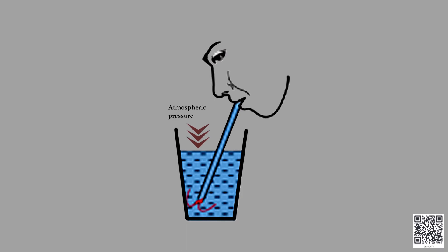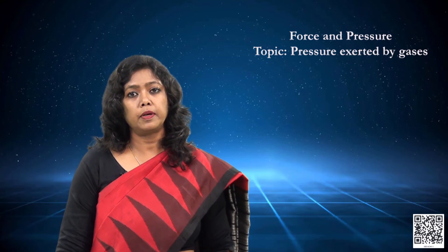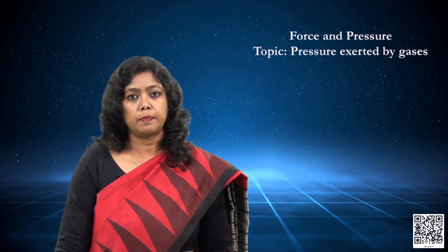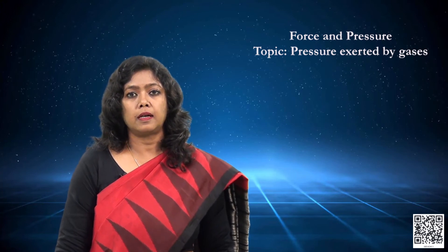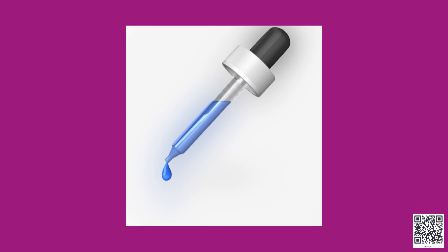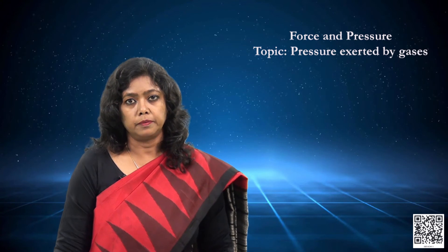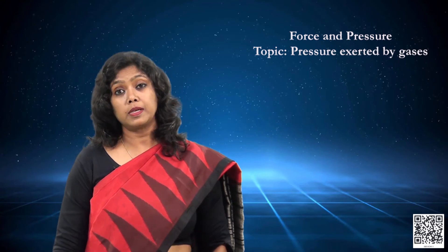Another very common example is the dropper. We have droppers in medicine bottles and various places. We press the rubber tip of the dropper and liquid enters inside the tube. It all works because of the difference in the pressure inside the tube and the atmospheric pressure outside.